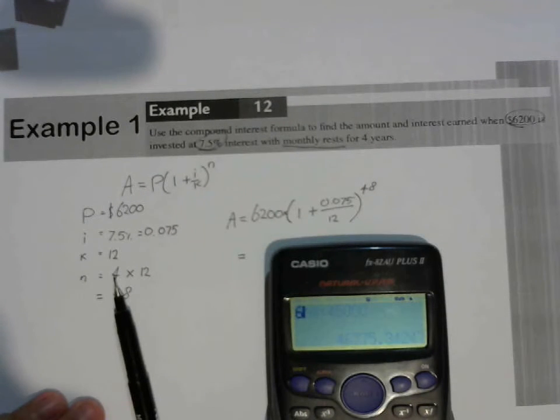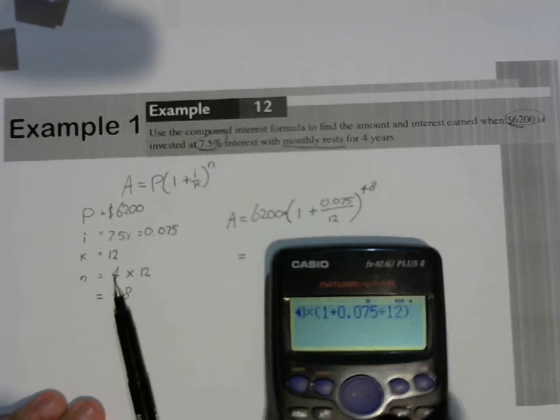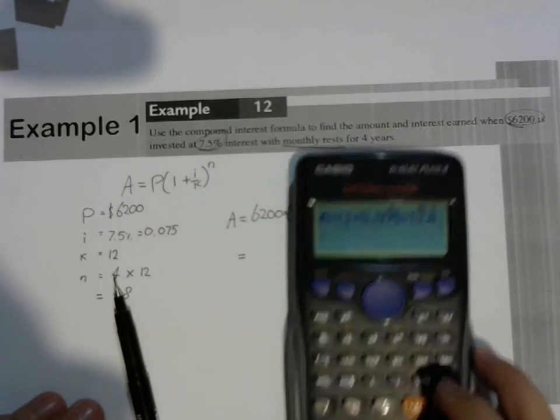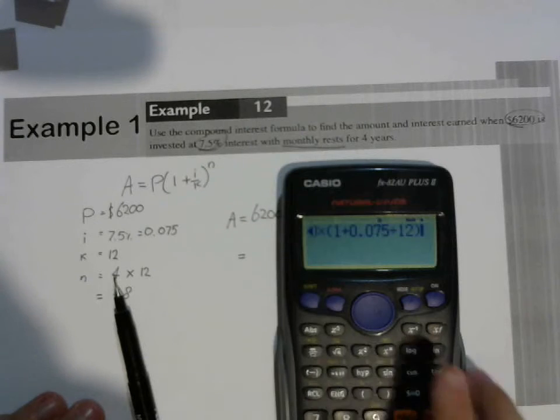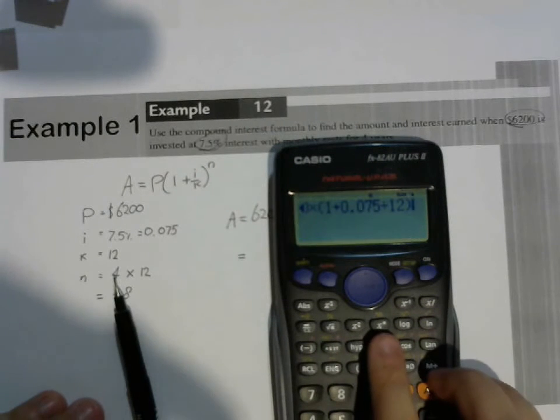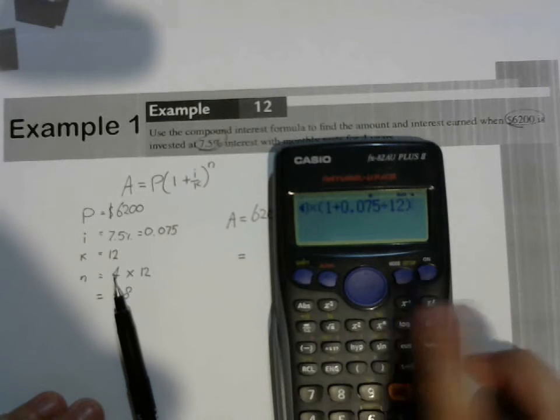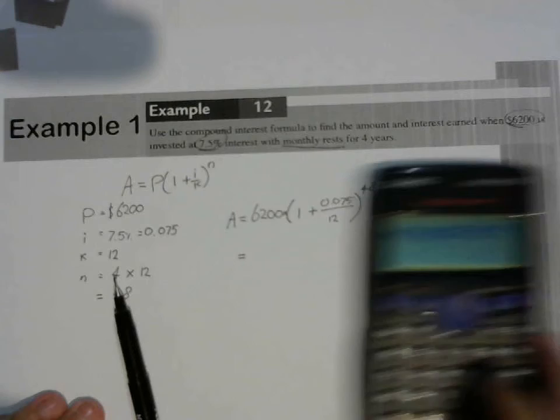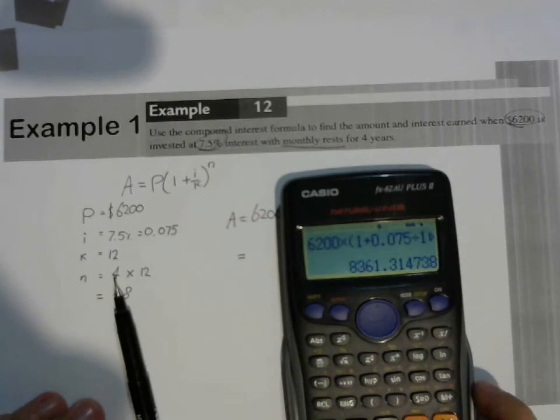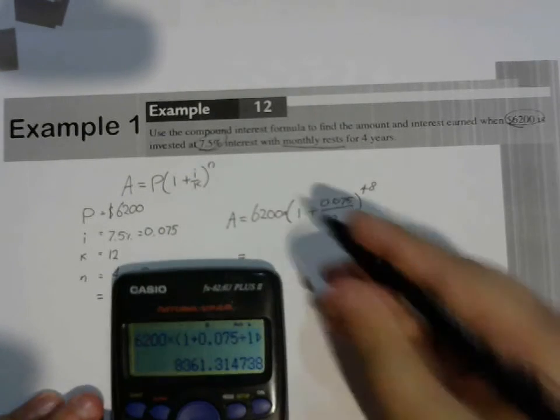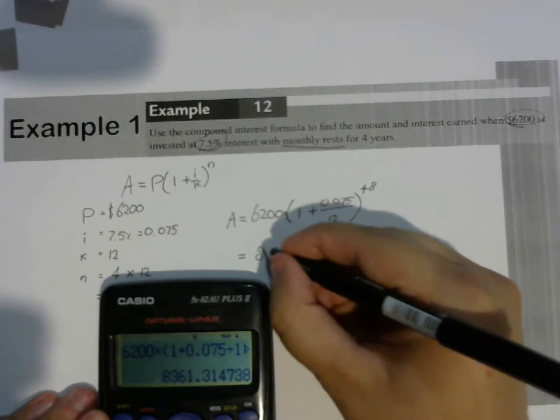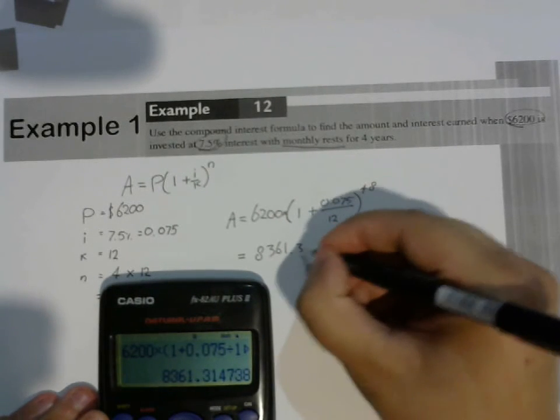I'm going to need my calculator for this. $6,200 times open bracket 1 plus 0.075 divided by 12 close bracket. And to do to the power of on your calculator, you go to this button, the X with the little square on top. And then we're going to type in our number, which is 48 equals.